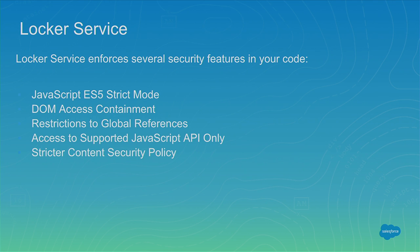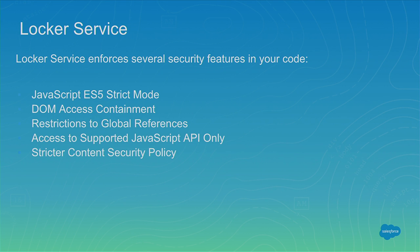DOM access is another issue: if I have 10 different Lightning components — some from Salesforce, some from different managed packages — because they all access the same DOM, they have access to all data rendered on the components. A component from a different namespace can scrape the DOM and get your finance data, which is insecure. Locker Service will enforce that components can only see their own particular DOM elements. We will give you secure versions of window, document, and element — seamlessly, so you don't have to say secure window; Locker Service will give you a secure version automatically.